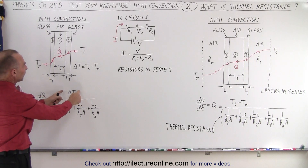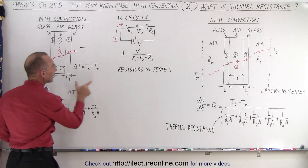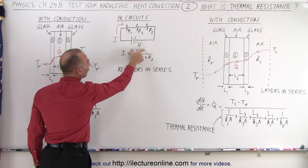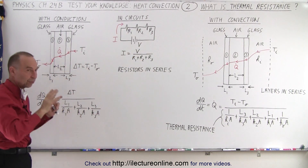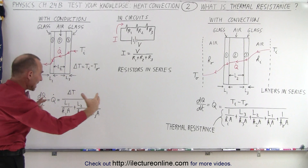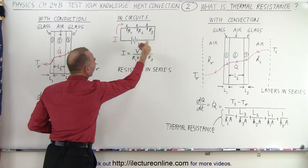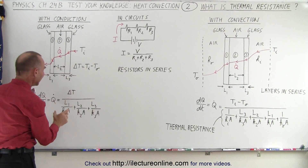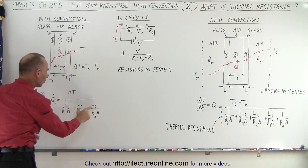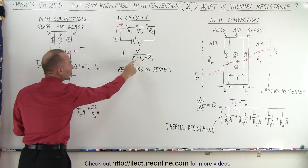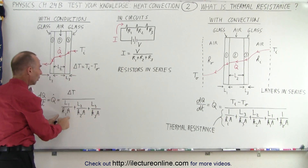Notice that the difference in temperature is analogous to the difference in voltage across the battery and across the resistor — that's what's driving heat through the window, just as voltage is what's driving current through the circuit. It's then divided by three terms, which are analogous to the resistors in the circuit.